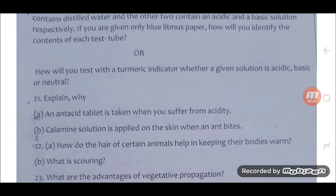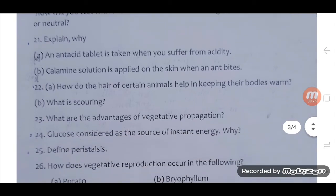Or how will you test with a turmeric indicator whether a given solution is acidic, basic or neutral? 21. Explain why A. An antacid tablet is taken when you suffer from acidity. B. Calamine lotion is applied on the skin when an ant bites.